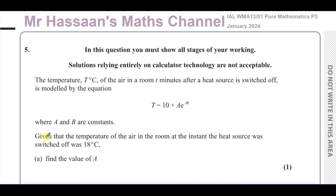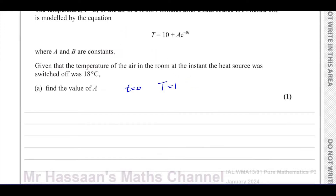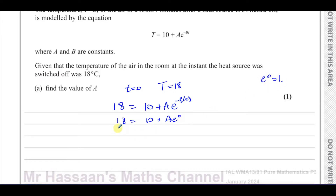A and b are constants. Given that the temperature of the air in the room at the instant the heat source was switched off was 18 degrees, find the value of A. So when the time was zero, small t is zero, the temperature is 18, so capital T is 18. We replace capital T with 18 and small t with zero, giving 18 = 10 + A times e to the power of zero. Since e^0 = 1, we have 18 = 10 + A.